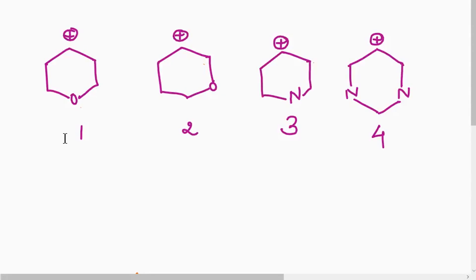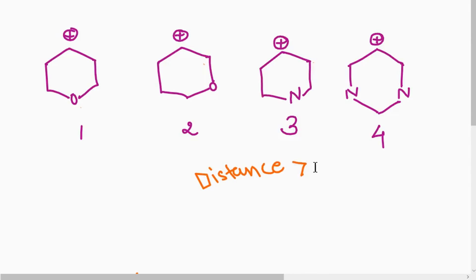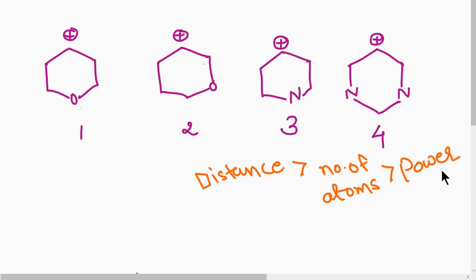In this example, oxygen and nitrogen are electron withdrawing groups, so in all these cases electron withdrawal takes place. You need to understand the concept of inductive effect and the criteria of distance. Distance has higher priority than number of atoms, and number of atoms has higher priority than power. So first check distance, then number of atoms, then power. If the distance is less, the oxygen or nitrogen will withdraw more electrons and will destabilize the carbocation.